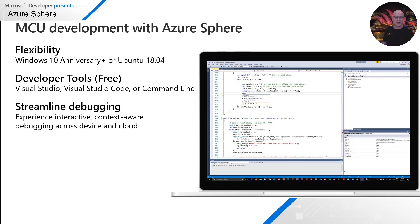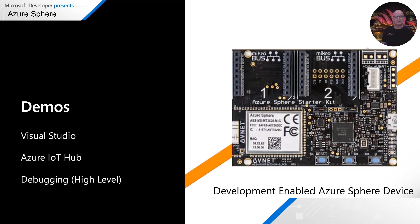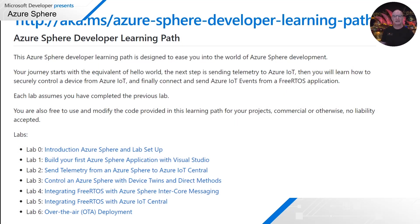The demo I'm going to step through uses the Avnet Azure Sphere Starter Kit. I've enabled this board for debugging — I've claimed it into a tenant, logged in, have development rights, and enabled the board for debugging. The key point is I could not just pick up a random Azure Sphere board and start developing on it — I need to have authenticated with that board and have developer rights. I'm going to use Visual Studio 2019, Azure IoT Hub, and debug a high-level application.